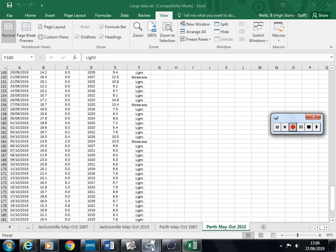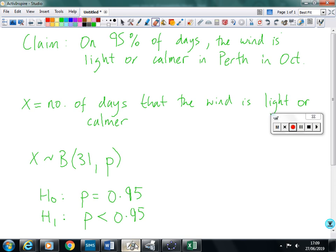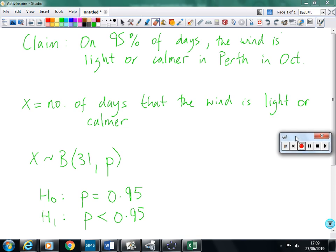Okay, so we're going to look at doing a hypothesis test for binomial distribution, and the scenario is this. We're interested in going to Perth, Australia, in October, but we're worried about the wind speed. We don't like it too windy.